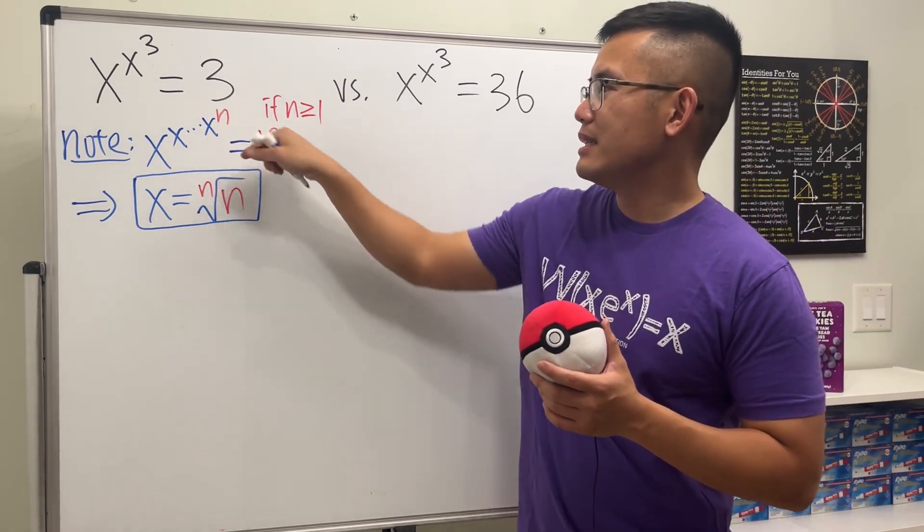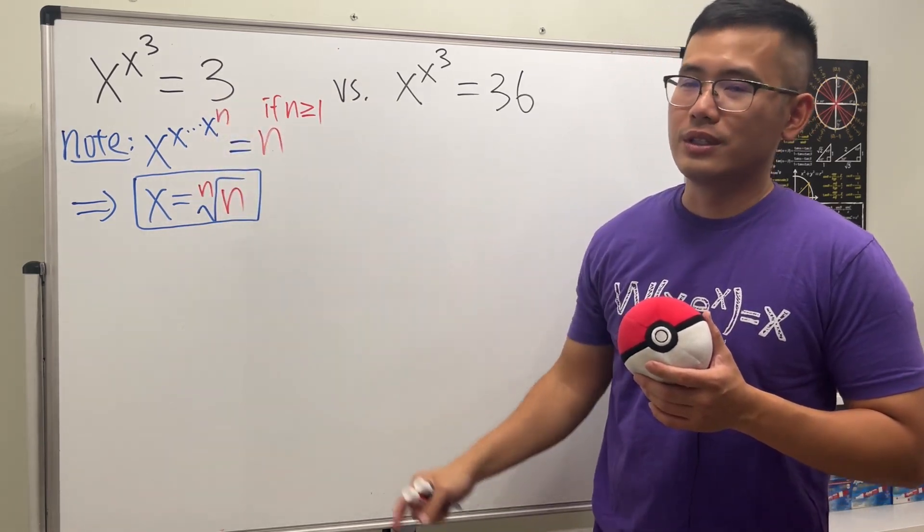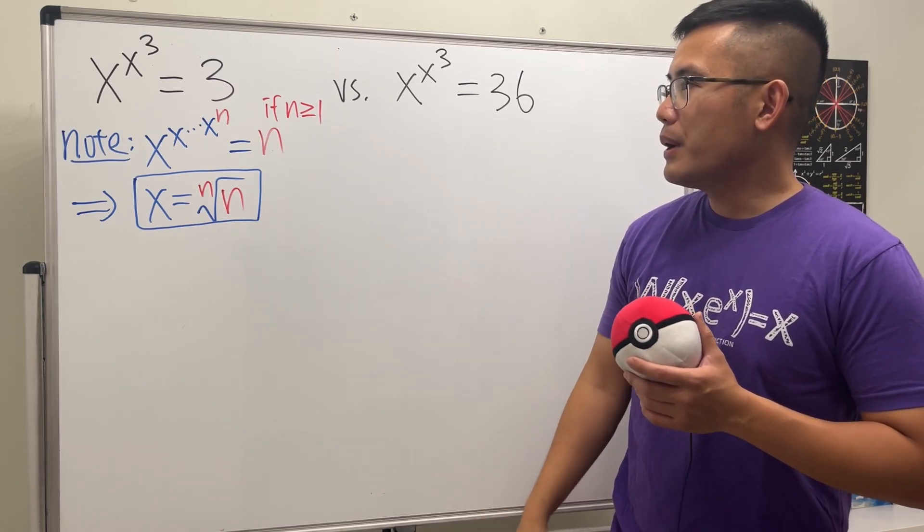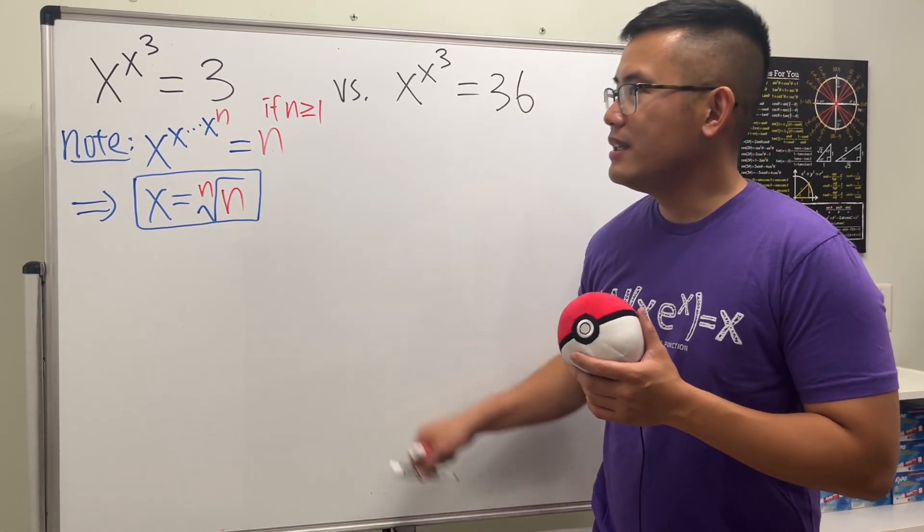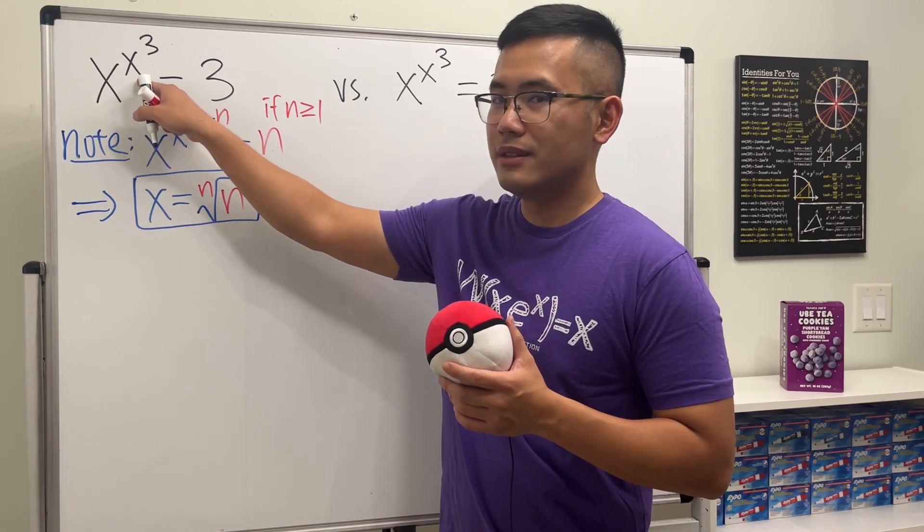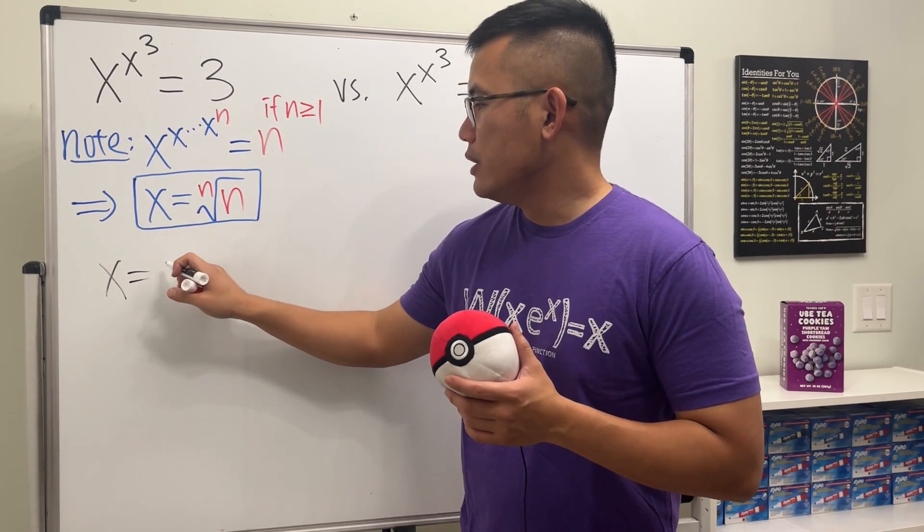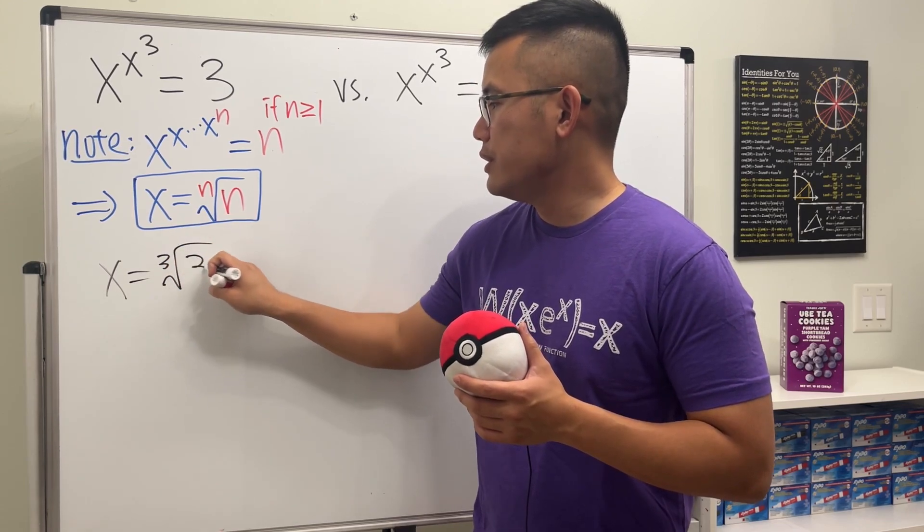Here we are just talking about three and three, so we'll just do this. And in fact, if n is equal to one, x is just equal to one, so it still works. So technically n is greater than or equal to one.